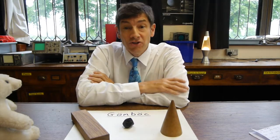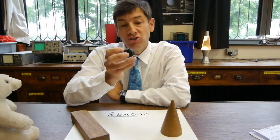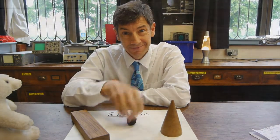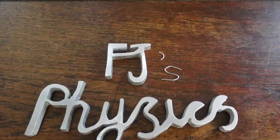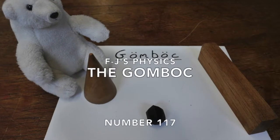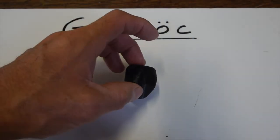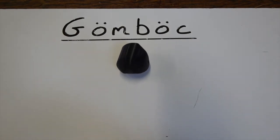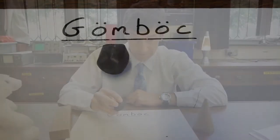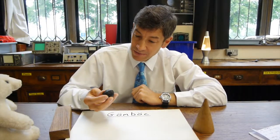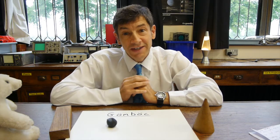Welcome back. I've got a really unusual demonstration for you today. We're going to be looking at this really very unusual shaped item called a gömböc. So what is a gömböc? Well, it's a most unusual object that when you put it on a surface it wiggles around for a while and then really strangely self-rights itself.